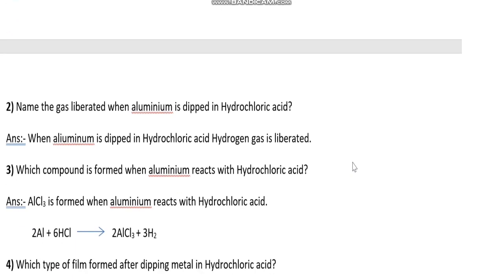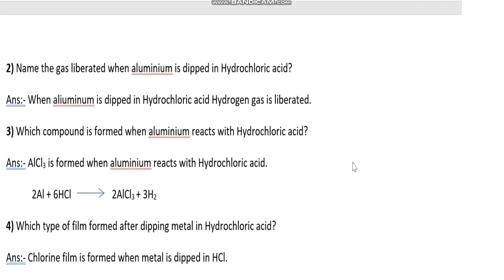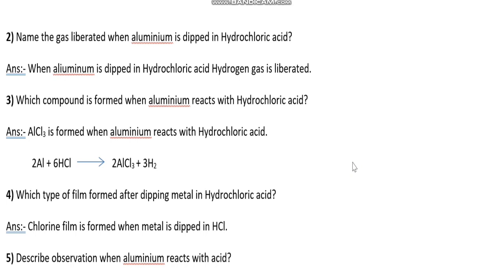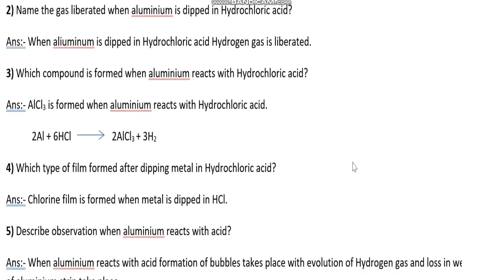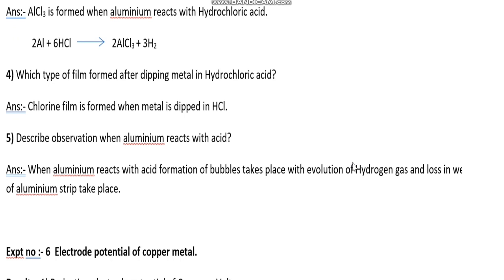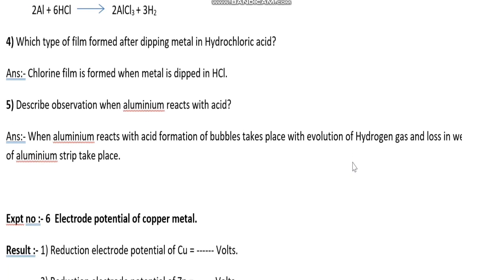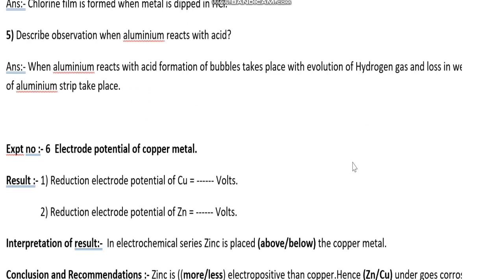Name the gas liberated when aluminum is dipped in hydrochloric acid: hydrogen gas is evolved. Which compound is formed when aluminum reacts with hydrochloric acid: there is formation of hydrogen gas. Which type of film is formed after dipping metal in hydrochloric acid: a chlorine film is formed. Describe observations when aluminum reacts with acid: formation of bubbles takes place with evolution of hydrogen gas, and loss in weight of the aluminum strip takes place.